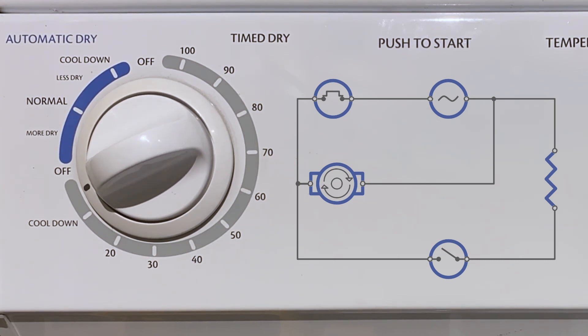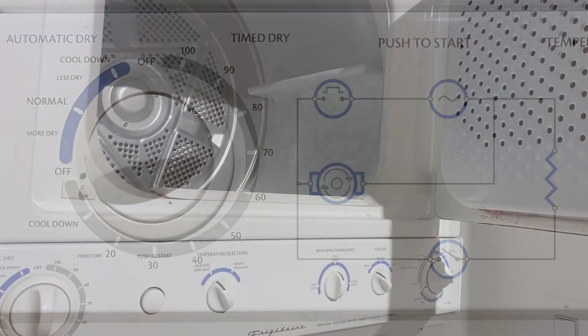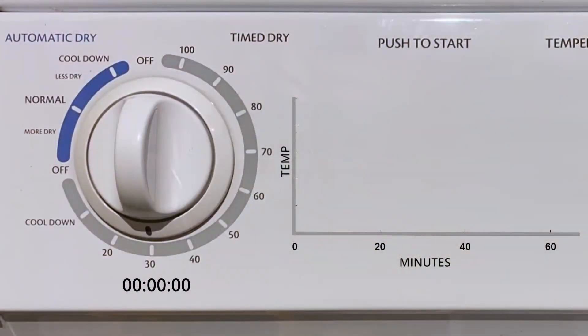Once the knob hits the off position, the main switch opens, the buzzer sounds, and the cycle is complete. Let's toss in a towel straight from the washer and begin our first test. Here we'll plot the temperature data of this dumb timed cycle.